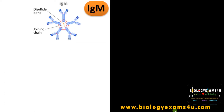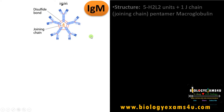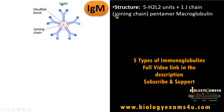In this video, let us understand IgM structure and function. IgM is the largest immunoglobulin. The structure consists of five H2L2 units, meaning five monomeric units joined by a joining chain. These monomeric units are bonded by disulfide bonds, making it a pentamer. It is also called a macroglobulin or the largest immunoglobulin. Let us zoom into this monomer to understand the structure better.